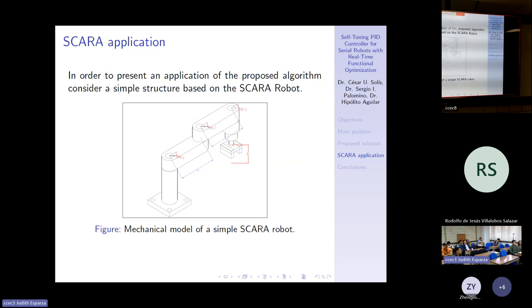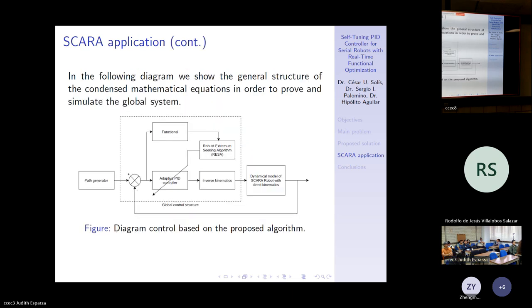Now, the SCARA application. In order to present an application of the proposed algorithm, consider a simple structure based on the SCARA robot. This is a basic structure of the SCARA robot, the mechanical model. The controller structure is given by this diagram. This is a simplification. Here, the dynamical model of the robot, the path generator, the adaptive controller proposed by the robust extremal seeking algorithm, with the functional of interest to optimize.